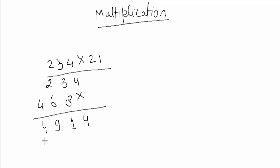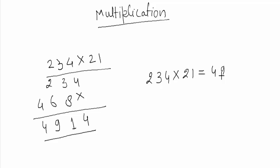Add the carry: 8 plus 1 carry is 9, and this gives us 4. So 234 into 21 equals 4914. This is the method we use in daily life. There is also another way to get this result.